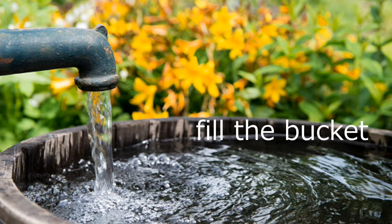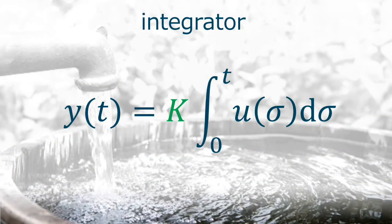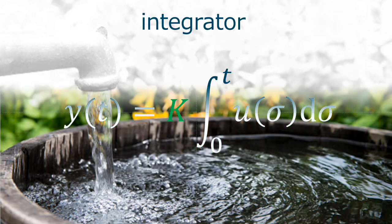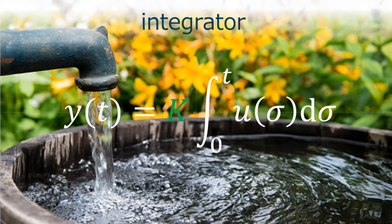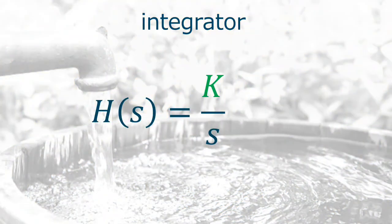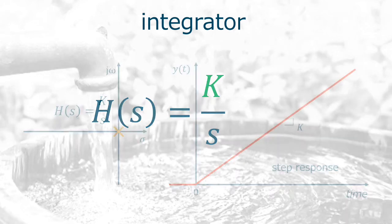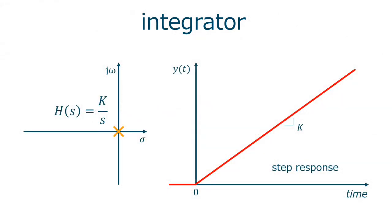There is a special case of the first order system corresponding to the effect of accumulation. In this case, the output of the plant is the integration of the input with gain k. So this transfer function is the integrator. The integrator is 1 over s. Then we can have an additional gain, k. If we excite an integrator with a unitary step, it will integrate the area of the step indefinitely. Note that the integrator has its pole already on the imaginary axis and therefore it is not asymptotically stable.